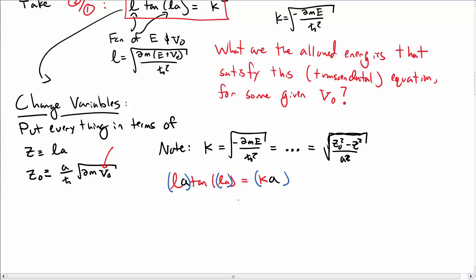K times a is the square root of Z naught squared minus Z squared. If I divide by Z on both sides, I can write tangent of Z equals the square root of Z naught squared over Z squared minus 1. This is a transcendental equation.